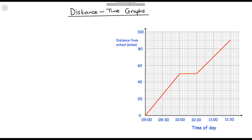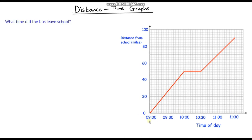Hello and welcome to a video on distance time graphs. This graph shows a school class's journey to the zoo, and partway through the journey they stop for a picnic. The first question is: what time did the bus leave school? Well, they left school at nine o'clock in the morning. Notice on the y-axis the distance is zero — they haven't set off on their journey yet.